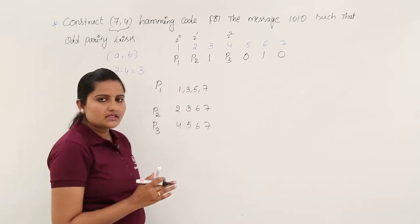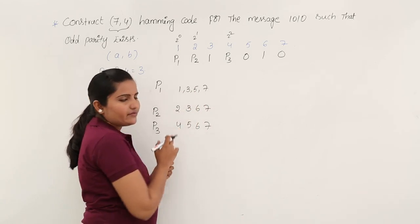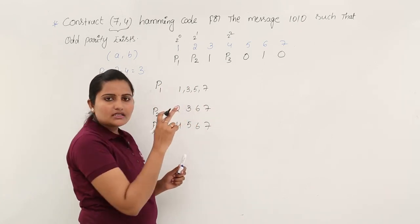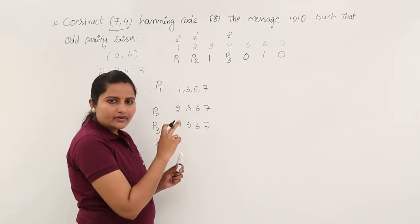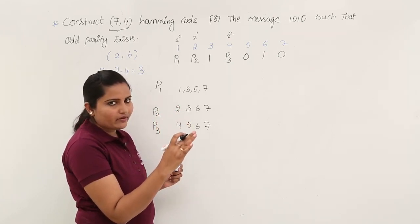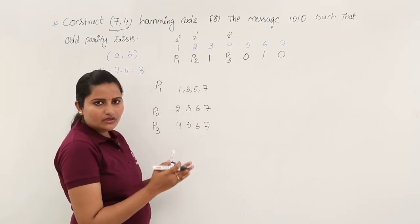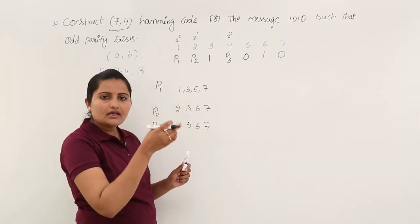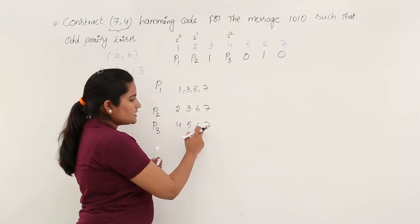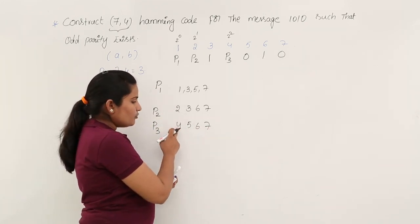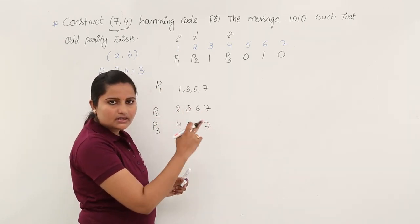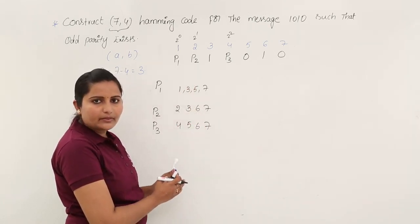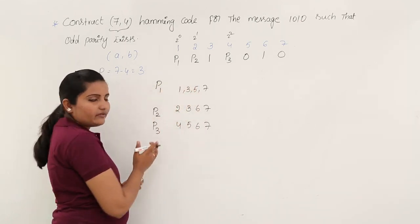The reason we check these positions is based on binary values. For positions 1, 3, 5, 7: binary of 1 is 001, binary of 3 is 011, binary of 5 is 101, binary of 7 is 111 — all have a 1 in the first (least significant) bit. For P2, positions 2, 3, 6, 7 all have a 1 in the second bit. For P3, positions 4, 5, 6, 7 — binary 100, 101, 110, 111 — all have a 1 in the third bit. That is why we use these position references for P1, P2, and P3.